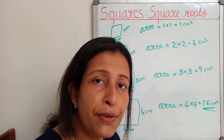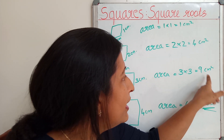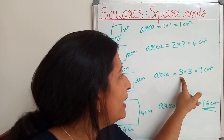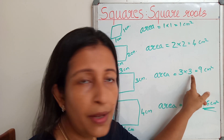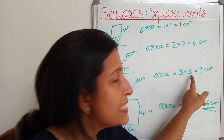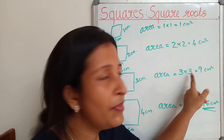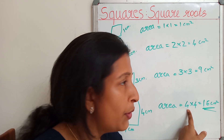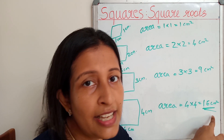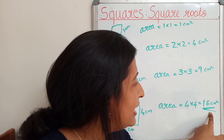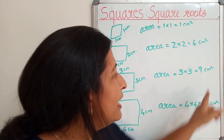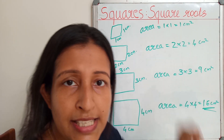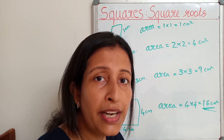What is the specialty of a square number? A square number can be expressed as the product of a number with itself. If we multiply the same number two times, we will get a square number. For example, multiplying 4 by 4 gives us 16. So 16 is the square number here. Similarly, 9, 4, and 1 are square numbers.